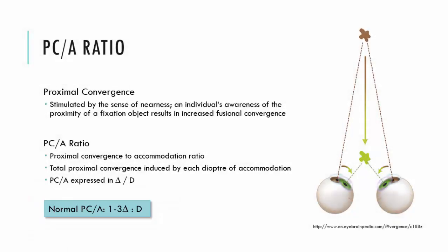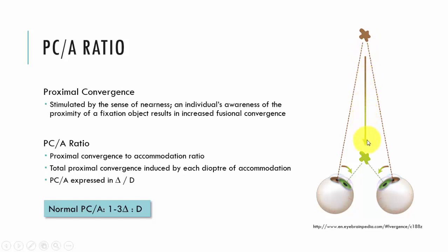Taking the example here, if we have a change between the distance image and the near image of one diopter, and we have a ratio of two to one, then we expect to see two diopters of proximal convergence with that change from distance to near. So we'll see an increase of two diopters going from far to near and a decrease going from near to far.